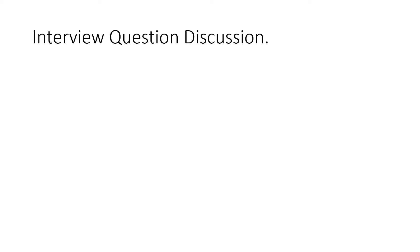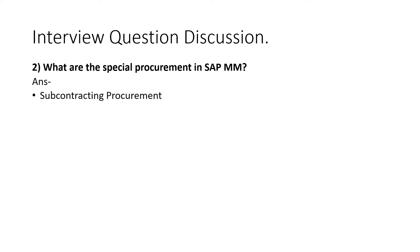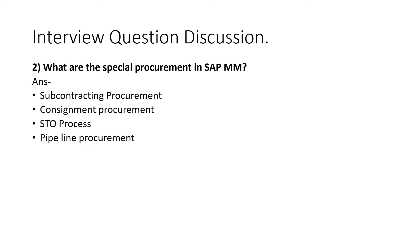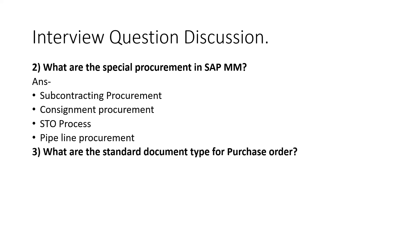The next question is: what are the special procurement types? There are four types: subcontracting, consignment, STO (stock transfer order), and pipeline procurement. You can verify these when creating an info record — the four special procurement types of standard, subcontract, consignment, and pipeline are visible there.